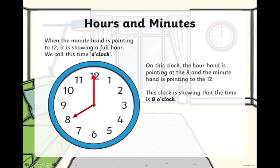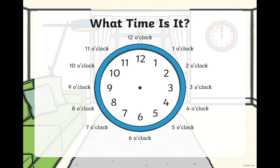Let us do some more examples. If we want to look at the time 1 o'clock, the minute hand, which is the long hand, is pointing at the 12, and the hour hand will point at the 1. So now the clock is showing 1 o'clock.